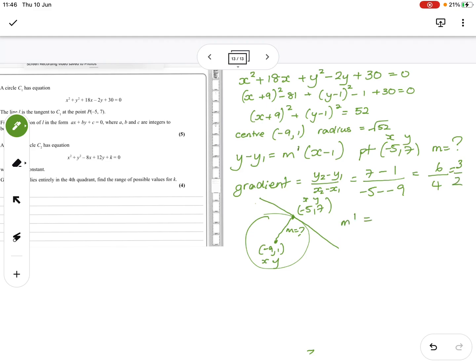So my perpendicular gradient, which is what I need here, is minus 2 over 3. So I'll then sub that into the original equation I've got here. I've got y minus 7 equals minus 2 over 3, x minus minus 5. So it becomes a plus.